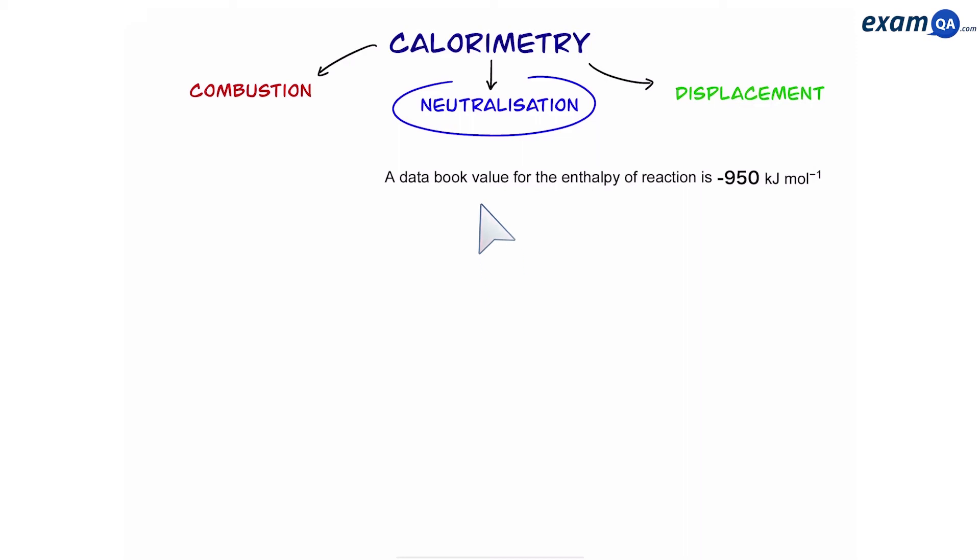Here's another question that could be asked regarding this topic. So it says here a data book value for the enthalpy of reaction is minus 950. Our value which was the experimental value was minus 668 kilojoules per mole. So we can see that our value is much less exothermic or is smaller compared to the actual data book value. So how come it's smaller?